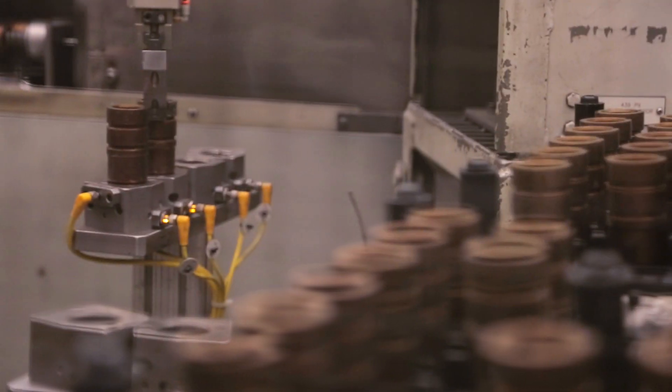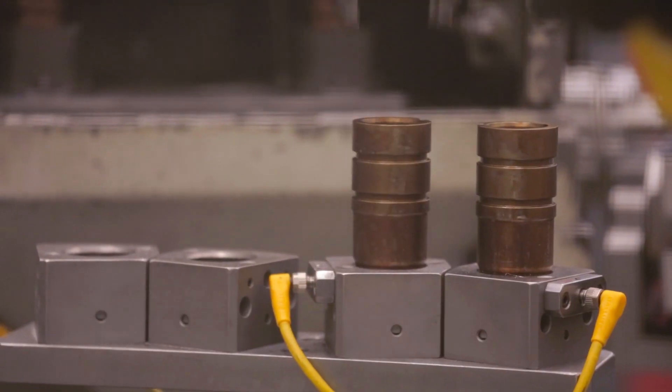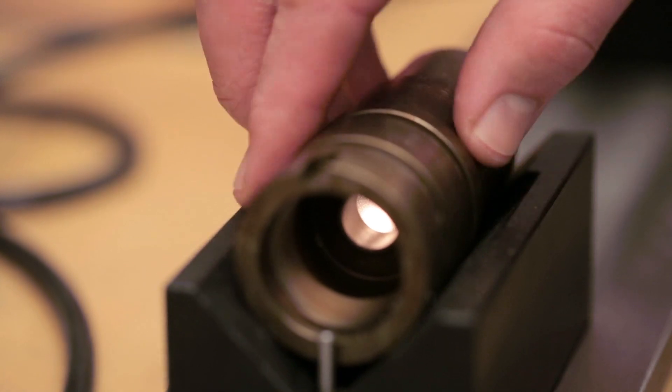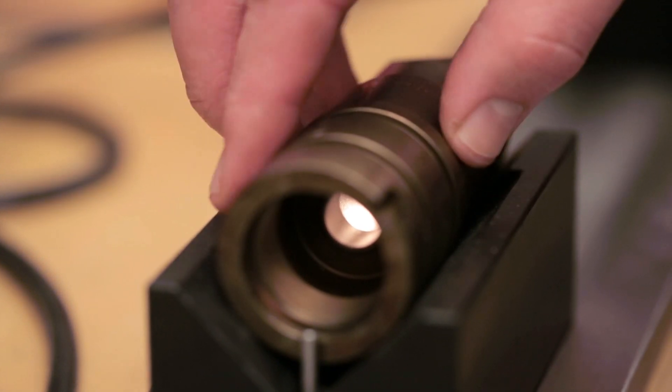The benefits to using the peening process that we've developed is it allows the engineers to design their product in a smaller package. They can use thinner wall sections because the compressive residual stresses make up for those thinner walls.